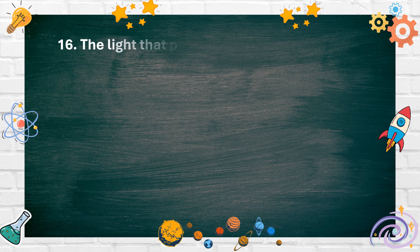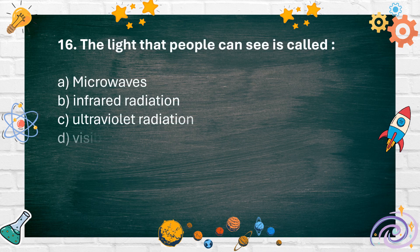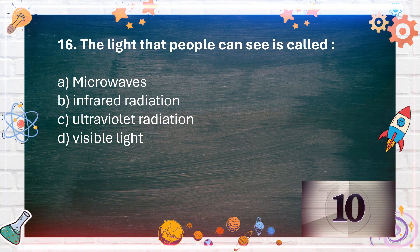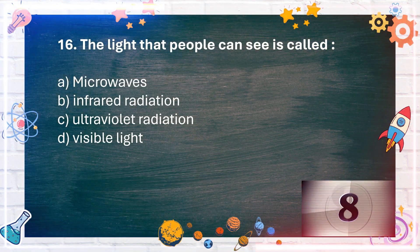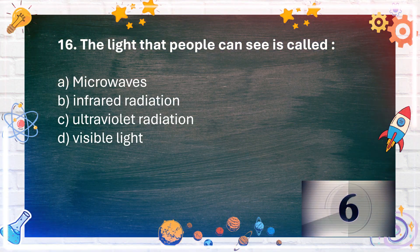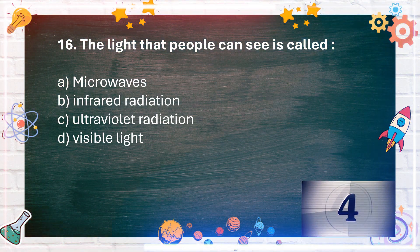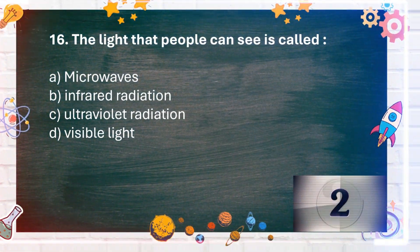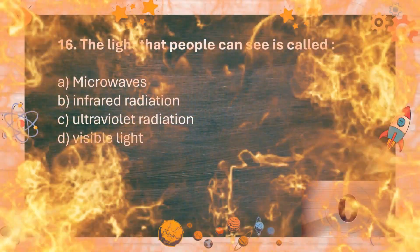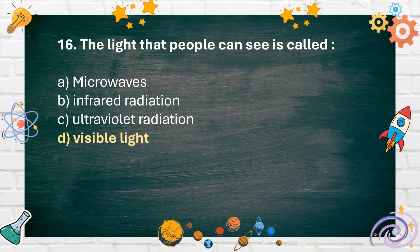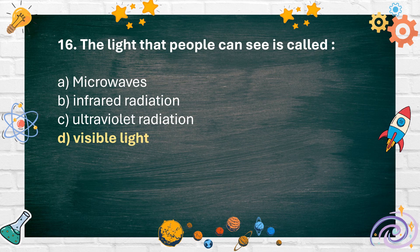Number 16. The light that people can see is called A. Microwaves B. Infrared radiation C. Ultraviolet radiation D. Visible light. The answer is D. Visible light.